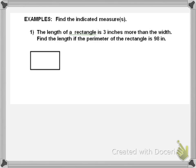In this first problem, the length of the rectangle is 3 inches more than the width. So I don't know what the width is, so the width is W. The length is 3 inches more than W, so it would be W plus 3.